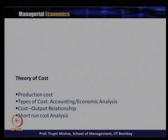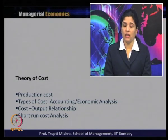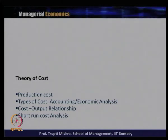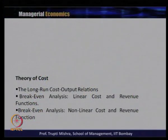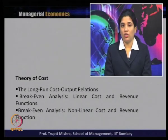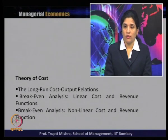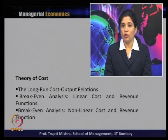Choice of input combination for maximization and minimization was discussed using the Lagrangian multiplier method. The expansion path shows producer equilibrium across different isocost and isoquant levels. On the cost side, types of cost relevant for accounting and economic analysis were covered. Short-run cost analysis includes one fixed cost and one variable cost, and the long-run cost output relationship shows the long-run average cost curve serving as a planning horizon and envelope curve.